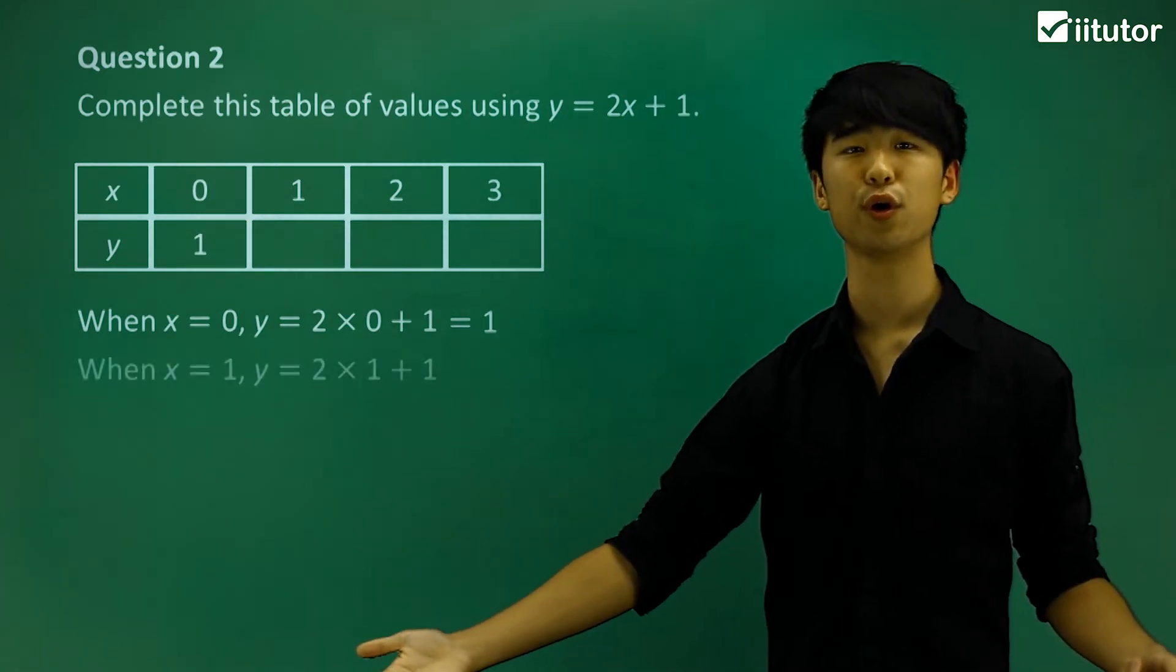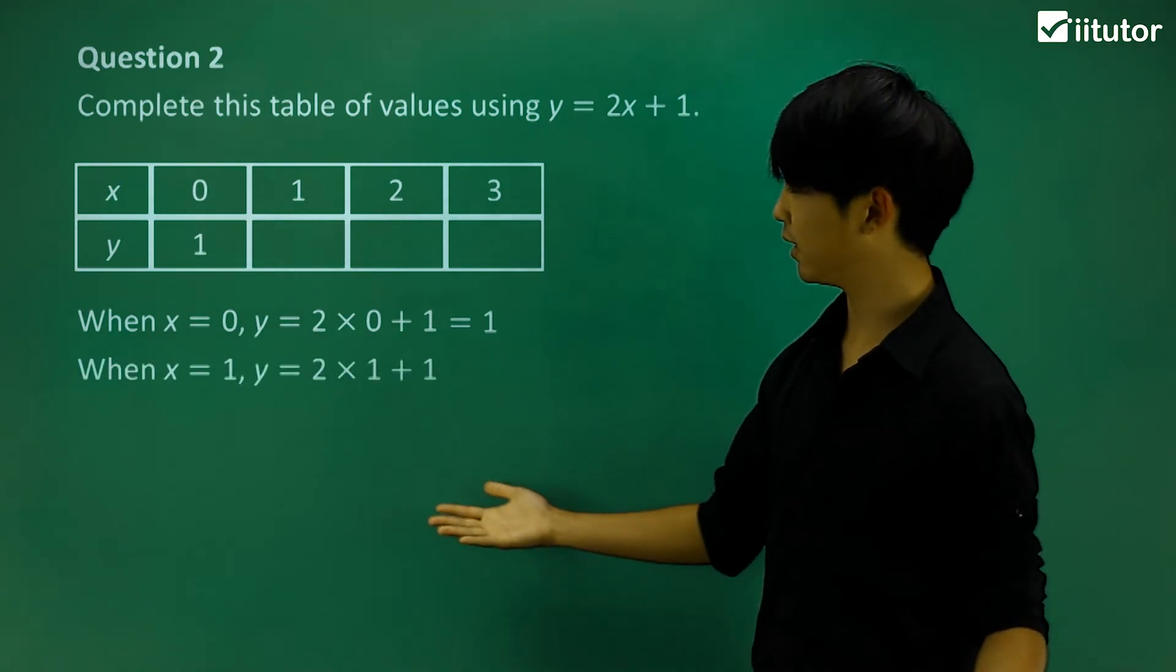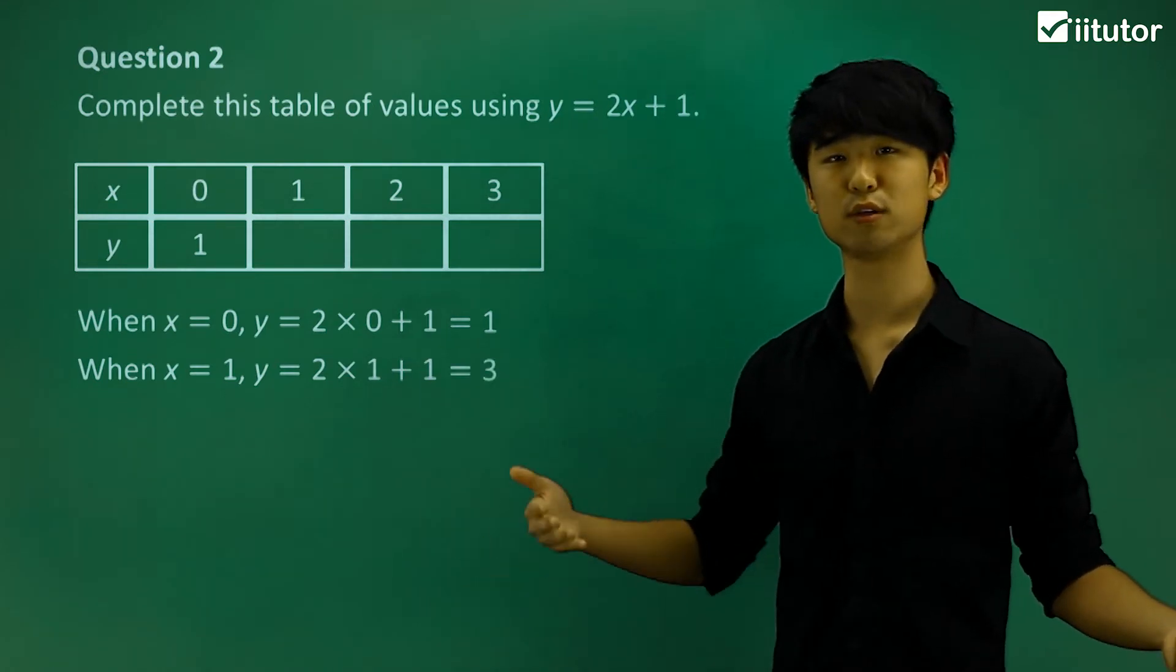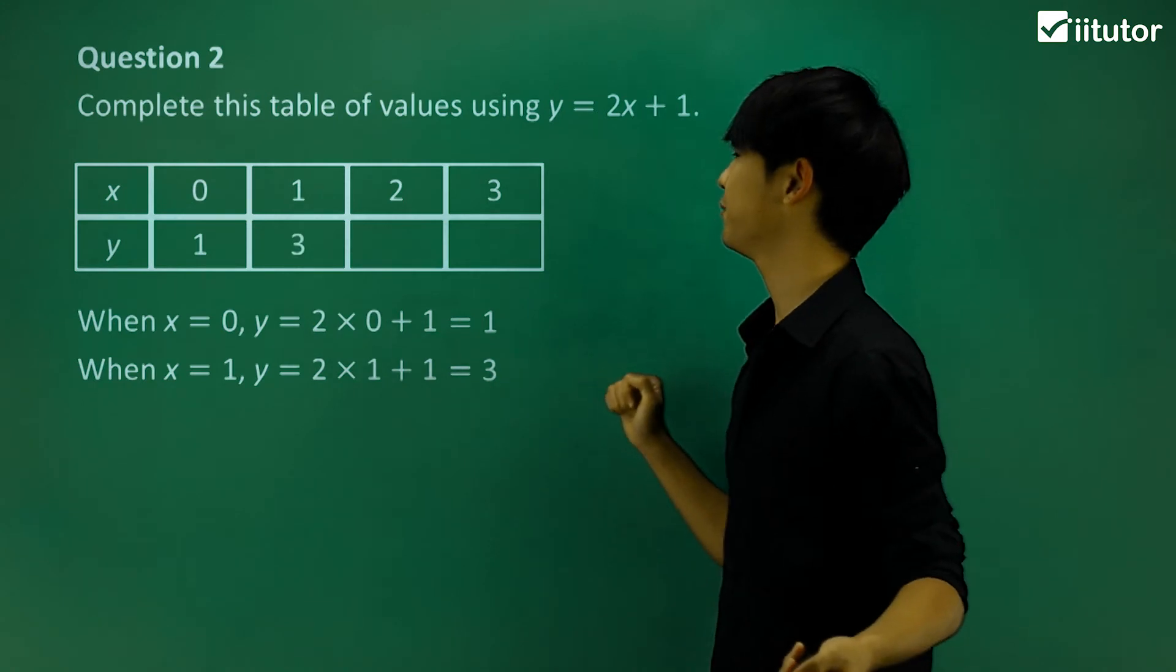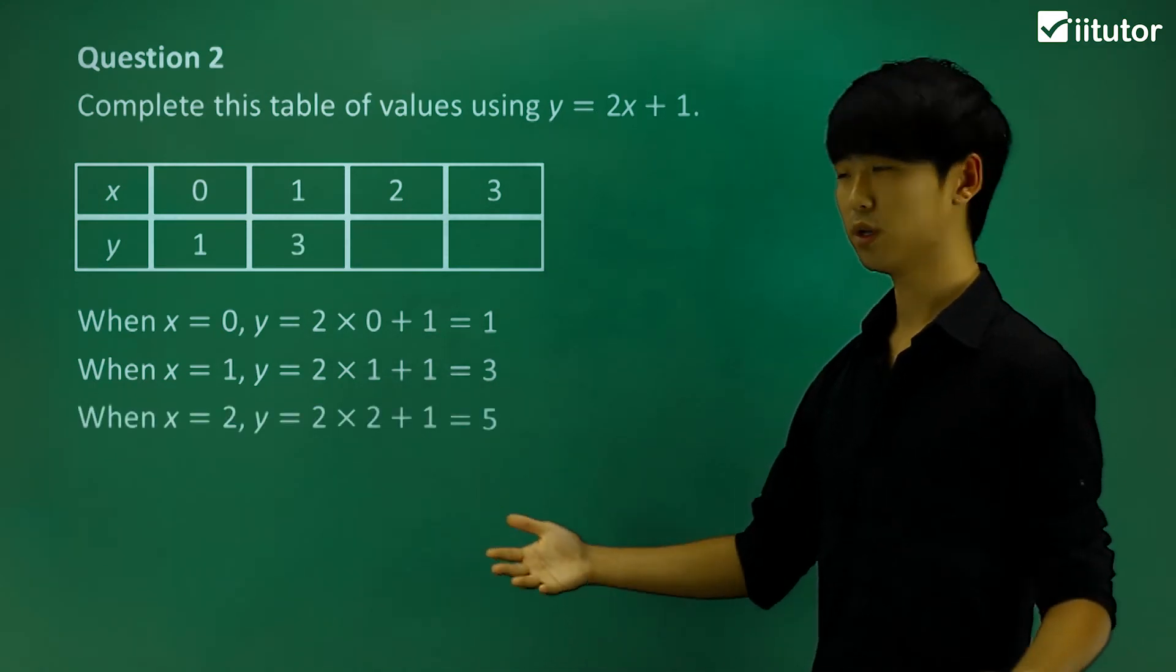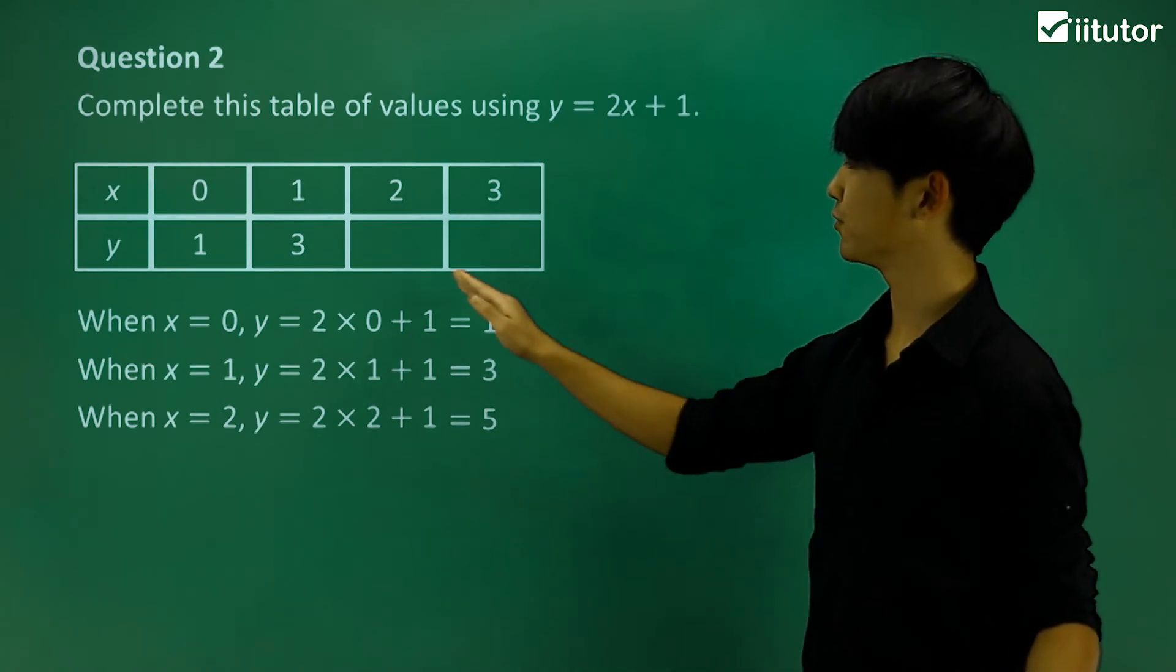We'll keep going. When x equals 1, then y equals 2 times 1 plus 1, which equals 3. Don't forget to write it back in there. Pretty straightforward. Let's keep going. When x equals 2, y should equal 5. Put it in there.